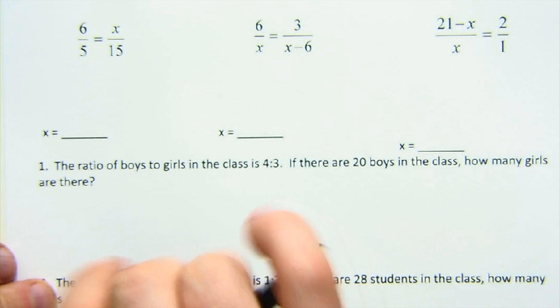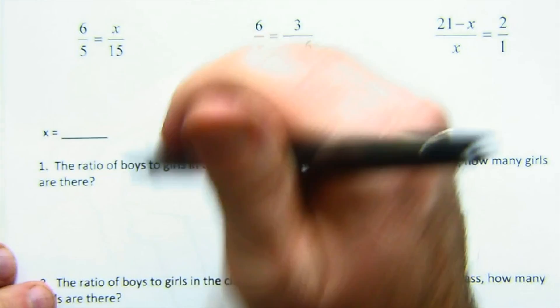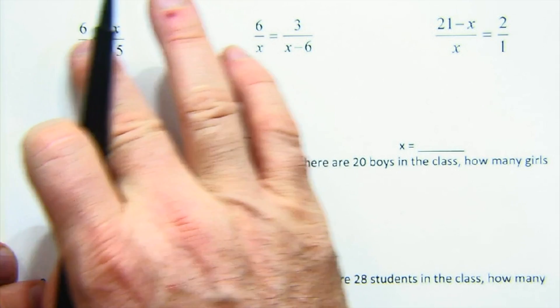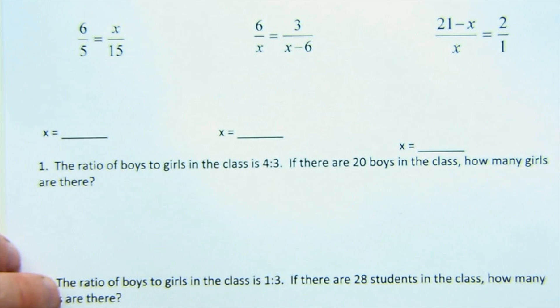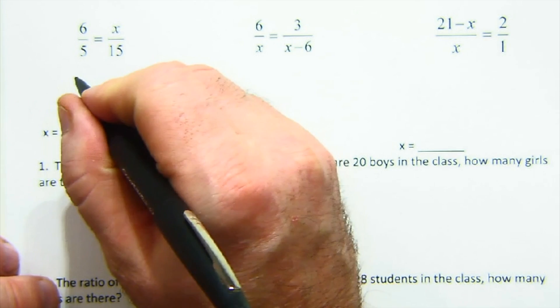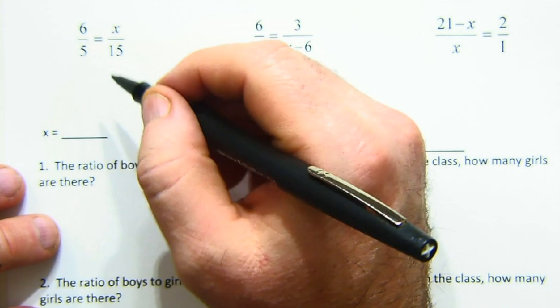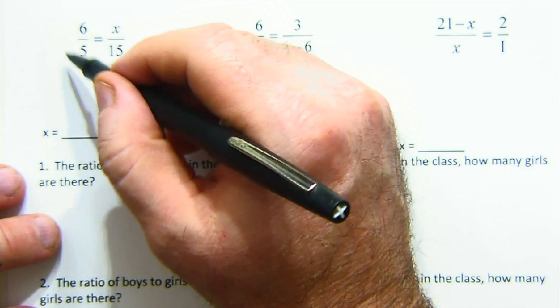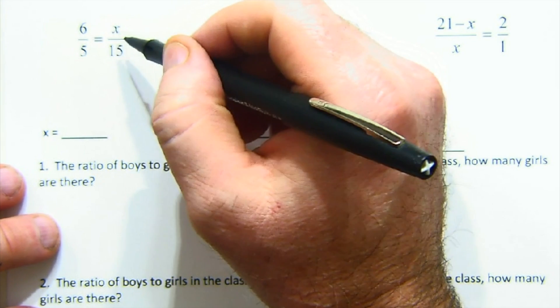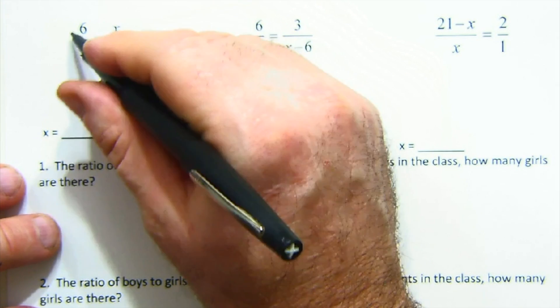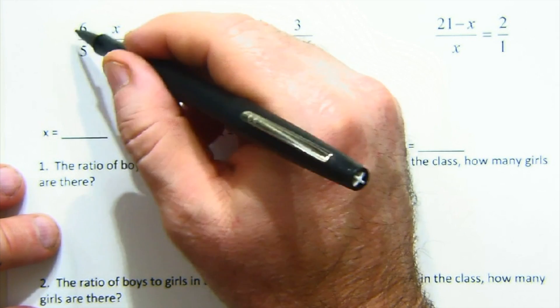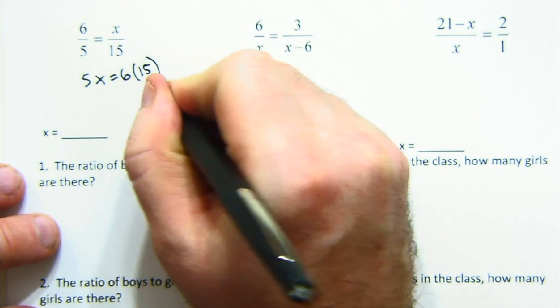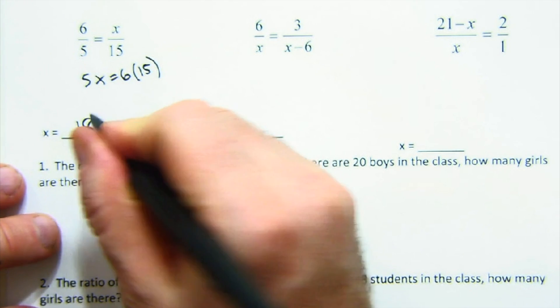A couple things that can happen when you deal with ratios. 6 is to 5 as x is to 15, but you can also say 5 is to 15 as 6 is to x and I can see that answer would be 18 right away. But you can cross-multiply. Cross-multiplication is just simply a way of shortening up a number of other smaller steps. So we get 6 times 15 here and we get our 18 value.